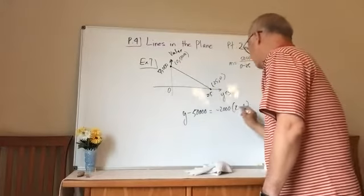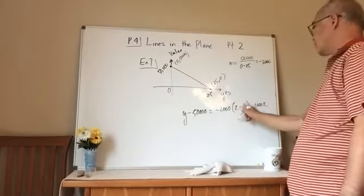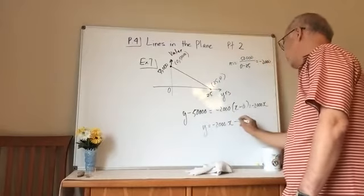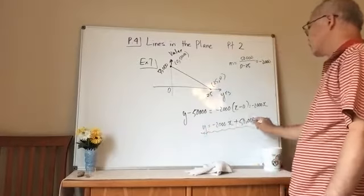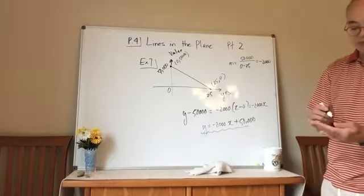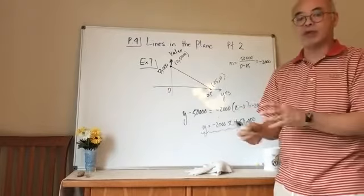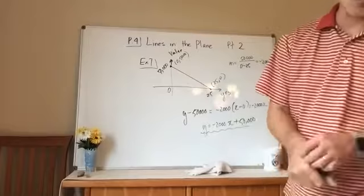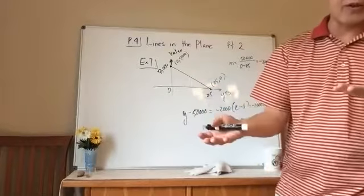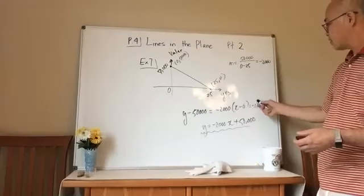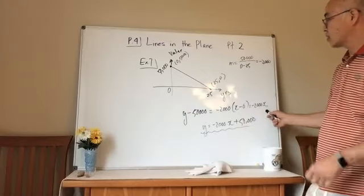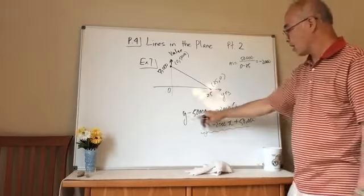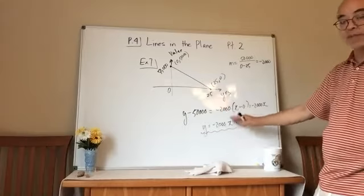I'm going to say y minus 50,000 is equal to my slope negative 2,000 over x minus zero. So I get negative 2,000 x times zero, so that goes away. Y is equal to negative 2,000 x plus 50,000. So this is my equation. So that's one way to do it.